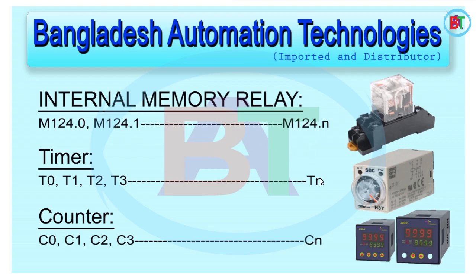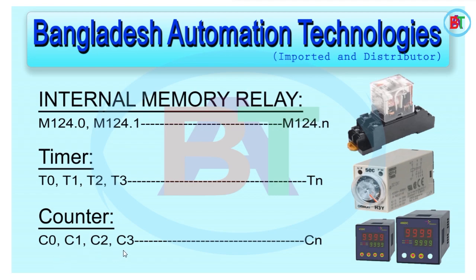This is the N3D timer. The timer addresses are T0, T1, T2, T3. What time is set and how much count is set? In this tutorial, we will show the PLC with time set specifically — for example, 5 seconds or 10 seconds. Counter addresses are C0, C1, C2, C3, and Cn.